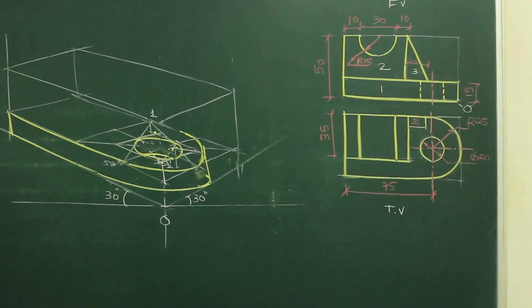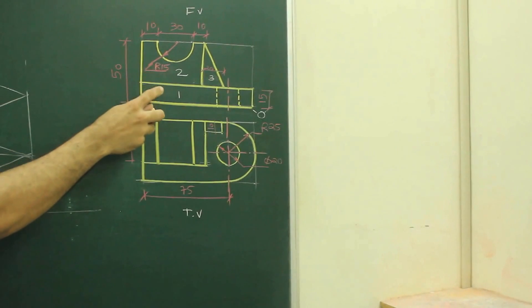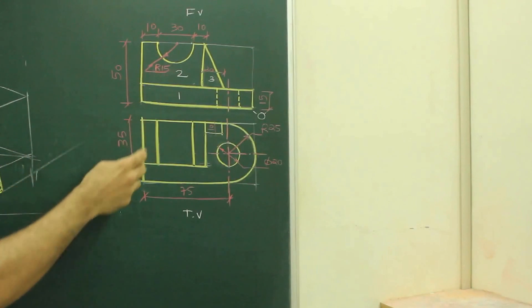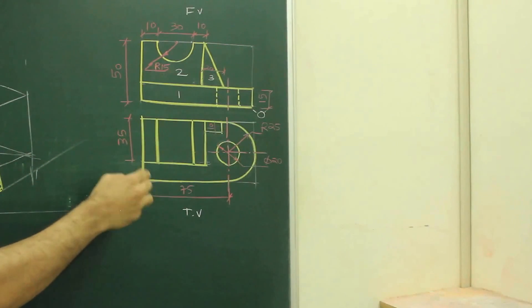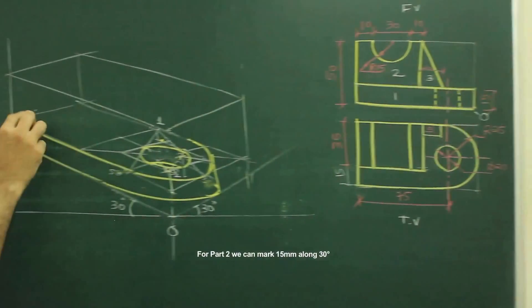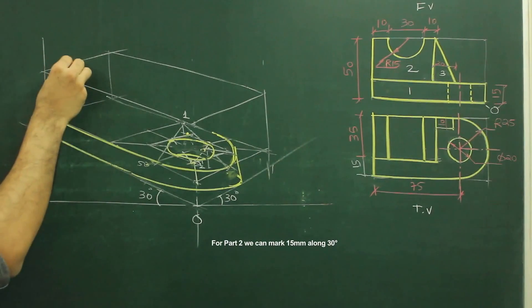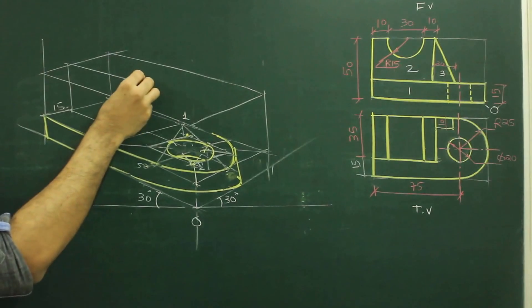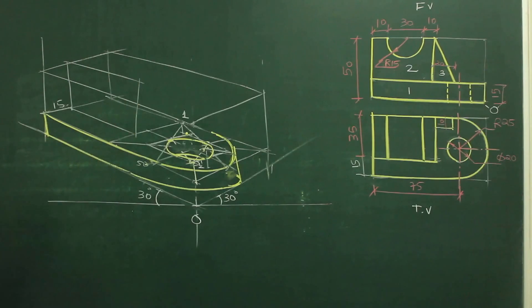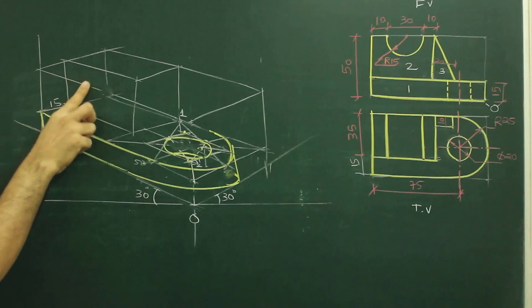Now we'll see part 2. See the main diagram. In part 2, there is a line between part 1 and part 2 in the front view — these two are at different levels, which we can see only from the top view. Total width is 15, this is 35. So we need to take 15 behind. From here, we'll go behind by 15, draw a line, and take 50. Because length is 10, 30, 10 — 50. Now I have to go behind by 35, so I'll go behind by 35 and join this. So we can draw part 2 over here.